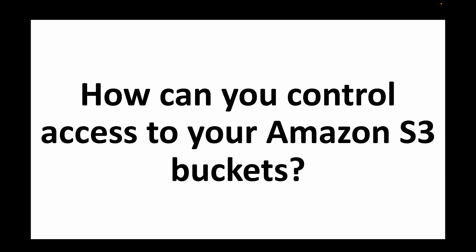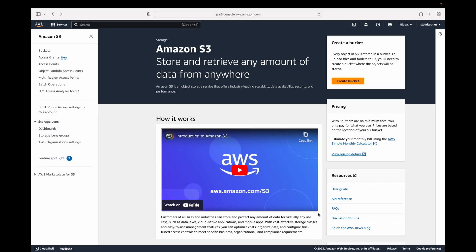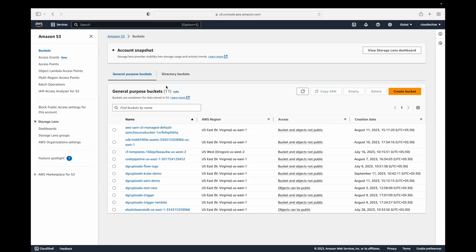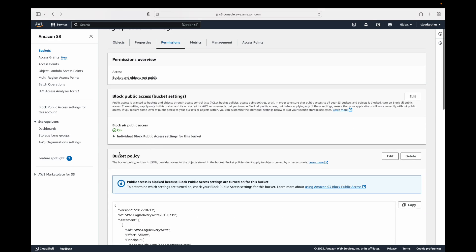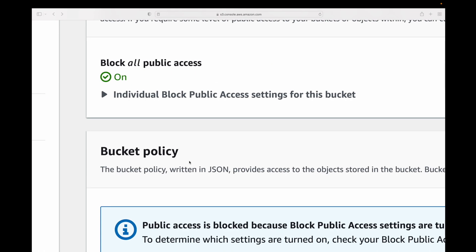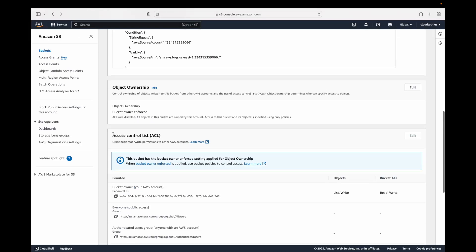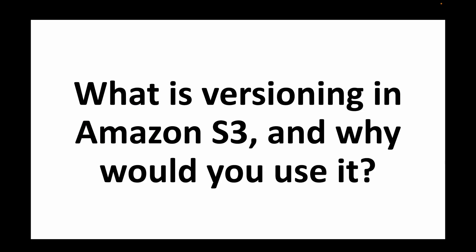The next question is: how can you control access to your Amazon S3 buckets? There are different ways to control access. We can use bucket policies — if you go to a bucket's permissions tab, you can see the bucket policy option. We also have ACLs, which are Access Control Lists. Additionally, we can use the IAM service by creating IAM policies to control permissions and access to your S3 bucket.